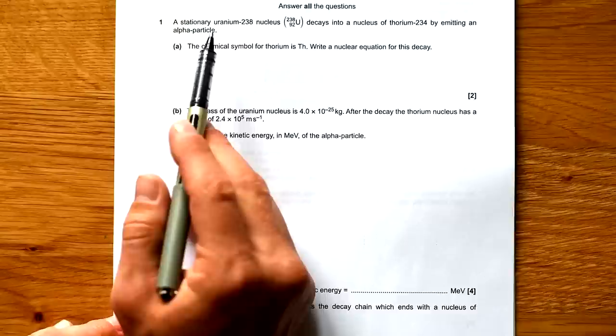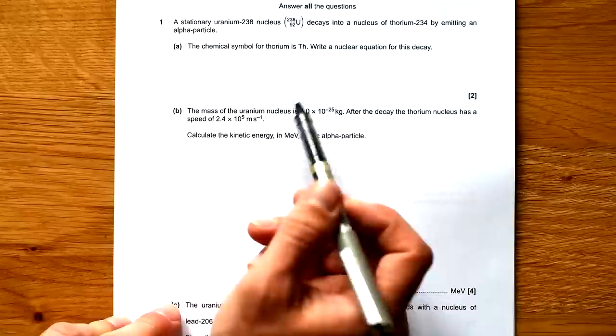Here's paper three from 2017 for OCR Physics. This is the unified physics paper. A stationary uranium-238 nucleus decays into a nucleus of thorium-234 by emitting an alpha particle. Chemical symbol is Th. Write a nuclear equation for this decay.